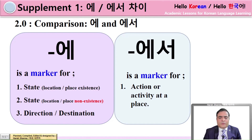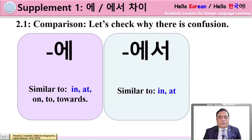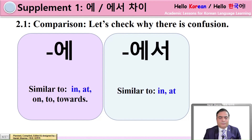Now, 에서 is a marker for action or activity at a place. Why is there confusion? When checking students' homework, there are errors in using 에 and 에서. The reason is there are similar meanings in the English language. 에 is similar to IN, AT, ON, TO, TOWARDS — and 에서 is also similar to IN and AT. And here the confusion starts.